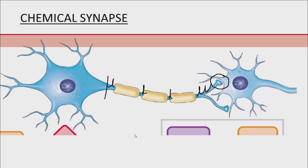Most of the time the axon terminal is sitting very close to another cell, and that structure — where you have an axon terminal and some part of another cell sitting very close to it — is called a synapse. Most synapses are chemical, because the way the first cell talks to the second cell is through some sort of chemical signal, most often a neurotransmitter.